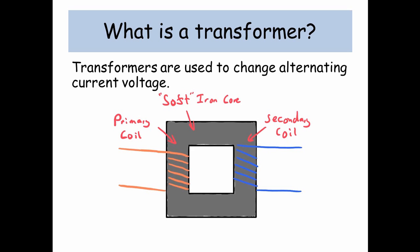The reason that we say soft is that iron is easily magnetized and easily demagnetized. So at the primary coil, there's an AC input, and at the secondary coil, there's an AC output.